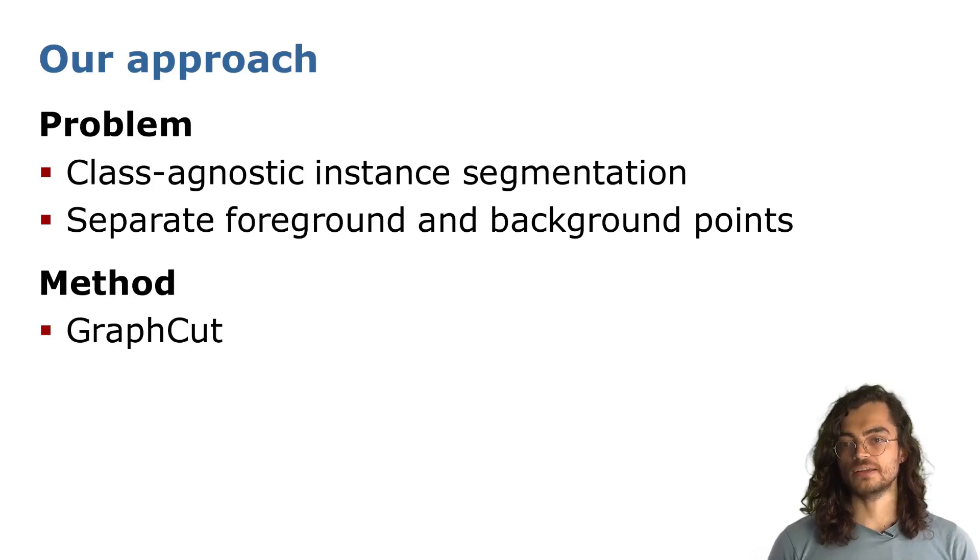First, we can define the identification of known and unknown instances as a class-agnostic instance segmentation. This means that, given a point cloud, we want to identify foreground objects, no matter their classes, and divide them from the background points.